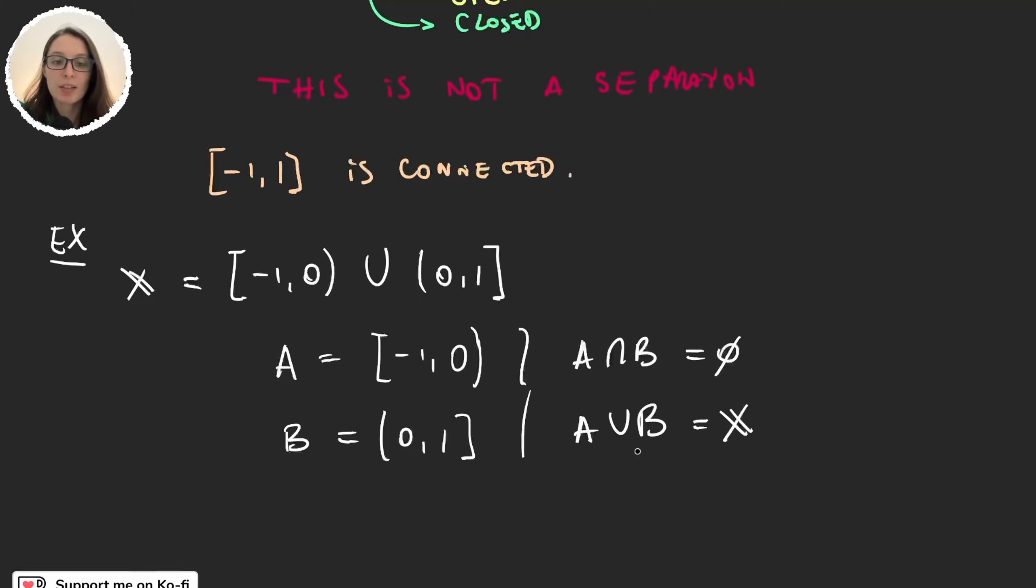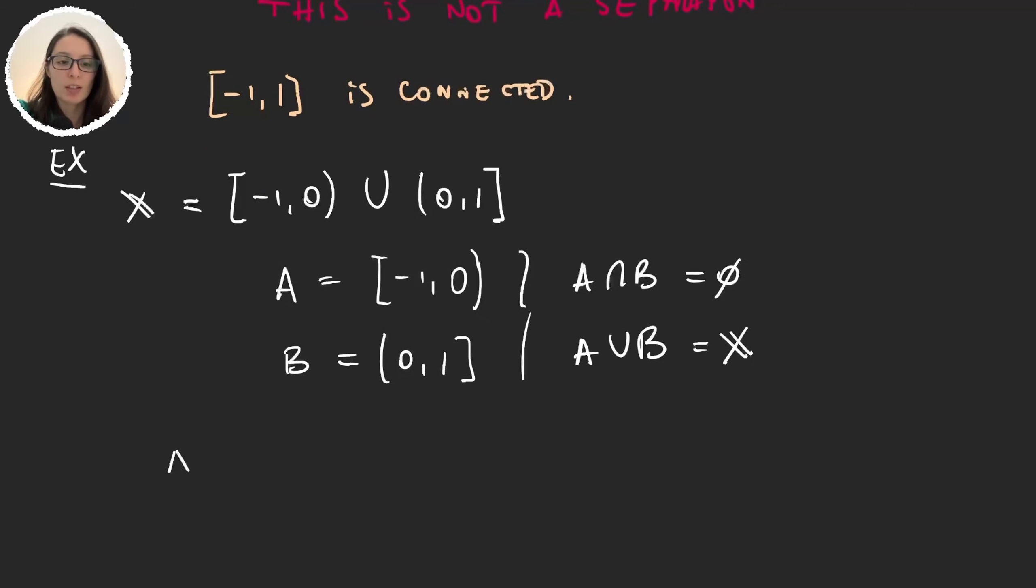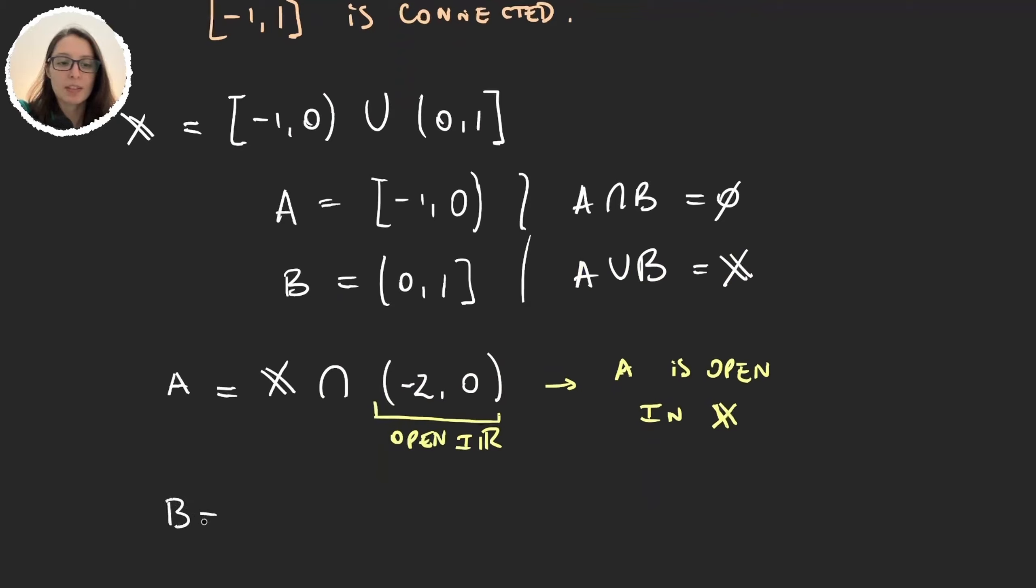So now let's check that A and B are open. This is going to be easy because A can be written as the space X intersection (-2,0). And given that (-2,0) is open in the real line with the standard topology then A is open in X. And B can be written as the space intersection (0,2). And again (0,2) is open in the real line with the standard topology. And so B is open in X.